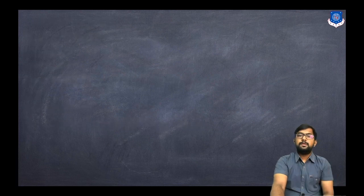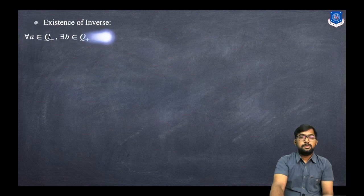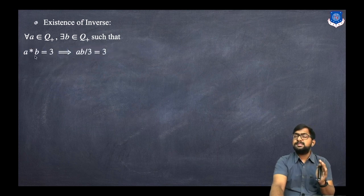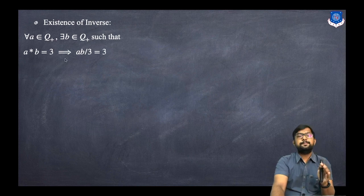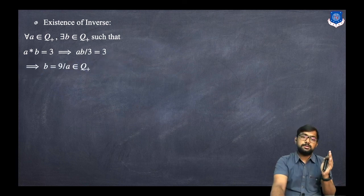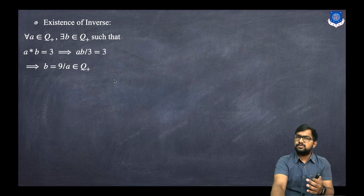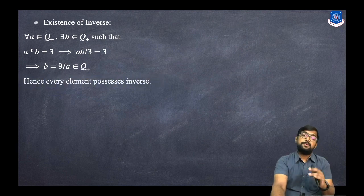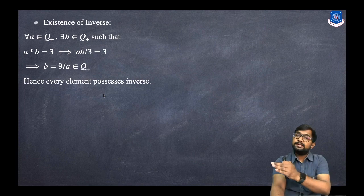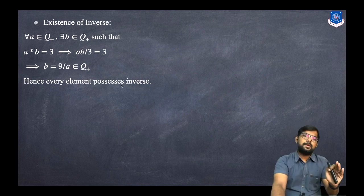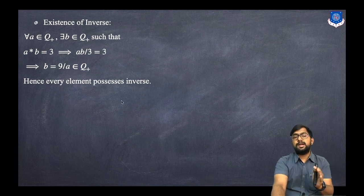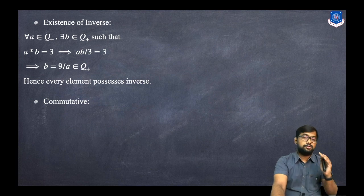For existence of inverse: for every a in Q+, there exists b in Q+ such that a star b equals the identity, which is 3. So ab/3 = 3, which gives ab = 9, so b = 9/a. Since a is a positive rational, 9/a is also in Q+. Hence every element has an inverse, specifically 9/a, since a · (9/a) = 9, and a star (9/a) = 9/3 = 3, the identity.